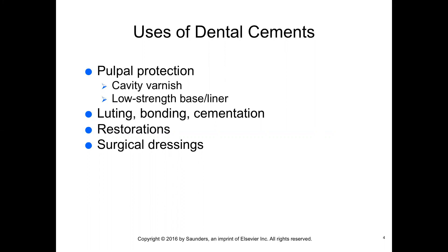Calcium hydroxide is used as a low-strength liner or base in cavity preps where the dentin no longer covers the pulp. It has an alkaline pH between 9 and 11, which stimulates secondary dentin when in direct contact with the pulp, providing a barrier between the pulp and the restoration. It also has antimicrobial and thermal insulating properties and provides minimal strength to support force.